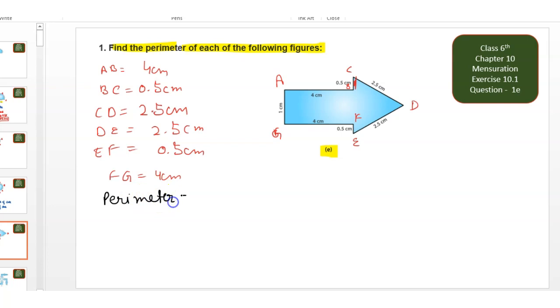Perimeter is equal to sum of all sides. Sides is equal to 4 plus 0.5 plus 2.5 plus 2.5 plus 0.5 plus 4. 4 plus 4 is 8, 0.5 plus 0.5 is 1, 2.5 plus 2.5 is 5.